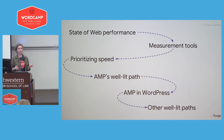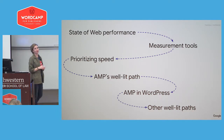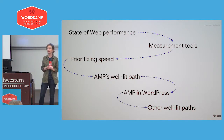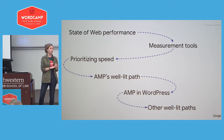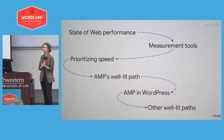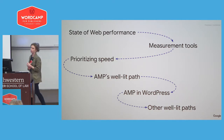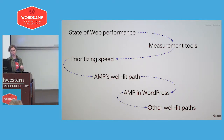Here's the meandering path of my talk today. I'll spend about two-thirds of it talking about web performance overall — state of web performance, some useful tools for measuring web performance — and then I will talk about AMP as one example of a well-lit path to performance, and spend a little bit of time on the state of AMP and WordPress.